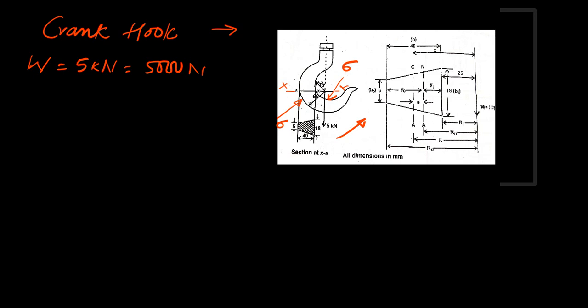The question is very clear. Load is given as 5000 N. All dimensions you have to take from this diagram only — only the load is given in the question. Inner surface radius is Ri. Ri is equal to 25 mm, where R_o is equal to 65 mm, meaning inner and outer radii respectively. The area also needs to be calculated — area for the trapezoidal shape.